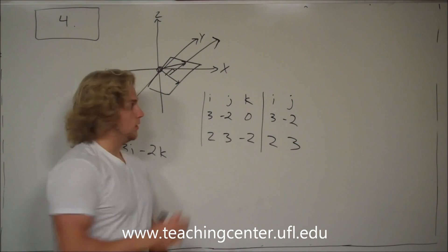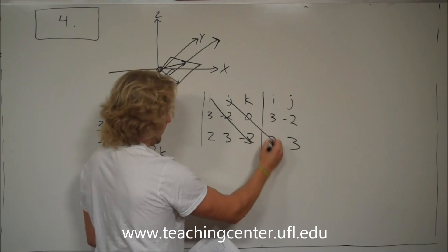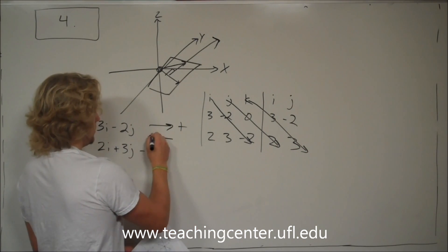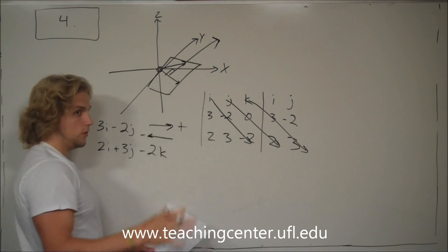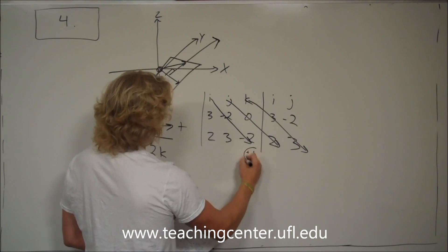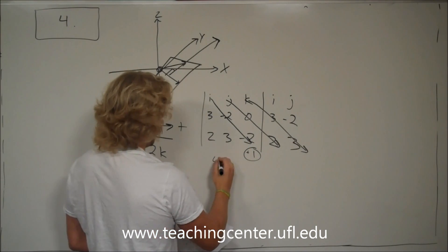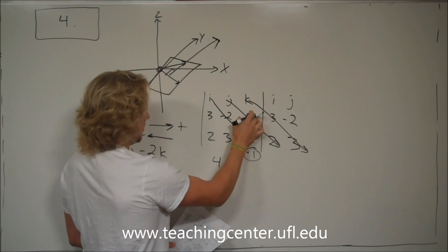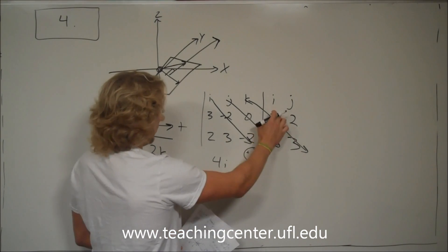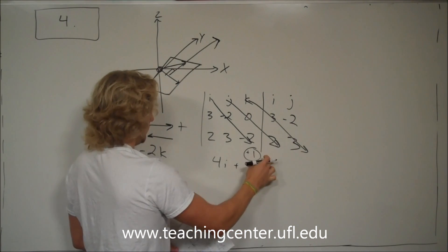Now, what you are going to do is take diagonals and multiply them. When you are going to the right, that is positive; to the left is negative. To the right, you multiply everything by positive 1 at the end. So, i times negative 2 times negative 2 — that will be 4i. For j, you have 0 there so you just take out that whole diagonal — there is no j term. Then you have k times 3 times 3, that's positive 9k.